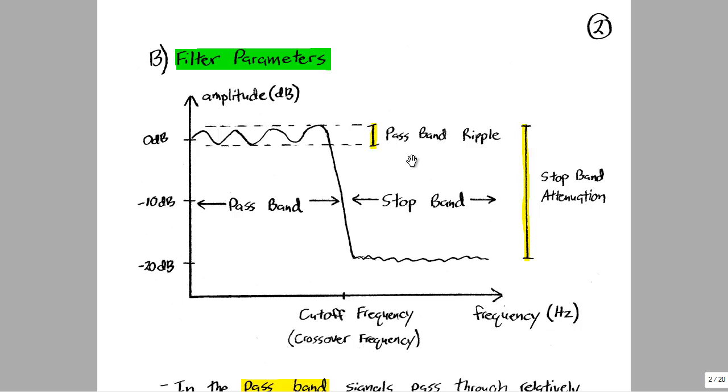Two criteria we're going to look at are pass band ripple and stop band attenuation. In a perfect filter there's no pass band ripple and the stop band attenuation would be infinite. But for our case, we're going to have a non-zero value of pass band ripple and the stop band attenuation might be negative 20 dB or negative 30 dB.